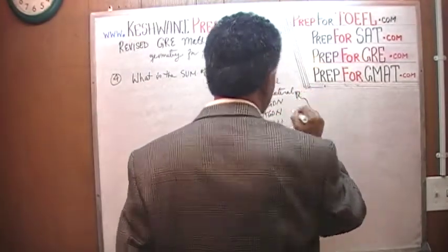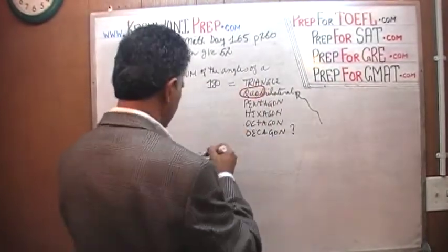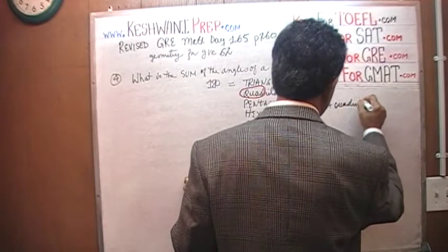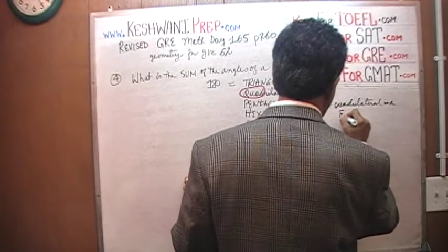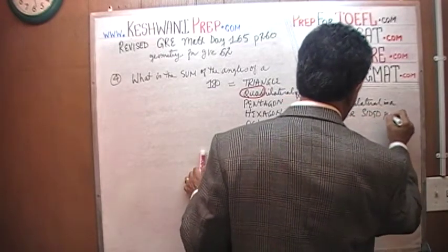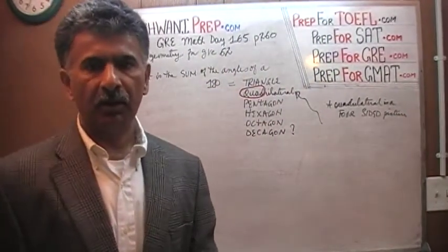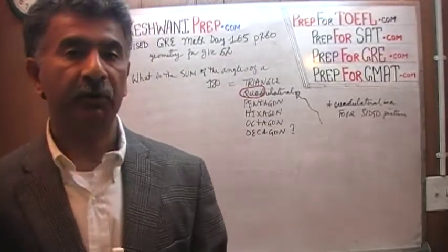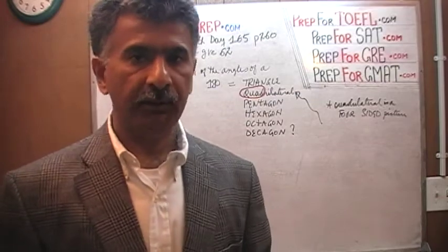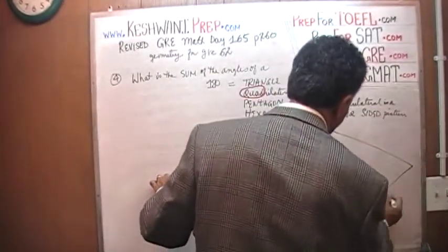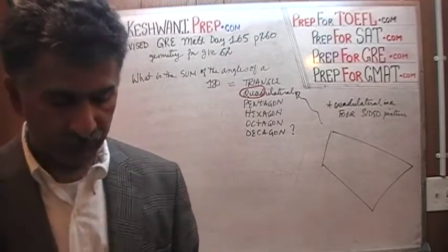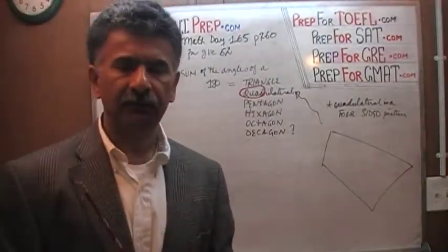What does quadrilateral mean? Quadrilateral means 4 — it is a four-sided figure. A square is a quadrilateral; all squares are quadrilaterals. But of course, not all quadrilaterals are squares just because it's a four-sided figure. Obviously it doesn't necessarily mean it's a square. A rectangle is also a quadrilateral. So let's draw a quadrilateral — there is one. It has no particular rhythm or rhyme; it goes all over the place. What is the sum of the angles of a quadrilateral?